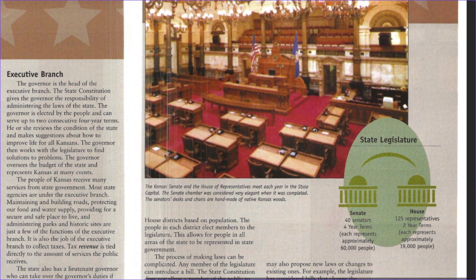Up here you can see a picture inside the Capitol building that's in Topeka. It says the Kansas Senate and the House of Representatives meet each year at the state capitol. The Senate chamber was considered very elegant when it was completed. The senators' desks and chairs are handmade of native Kansas woods.